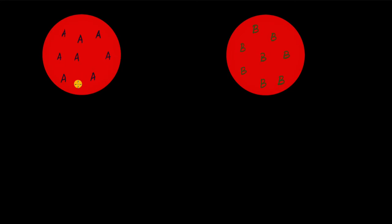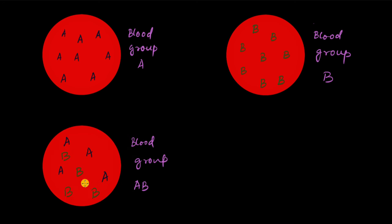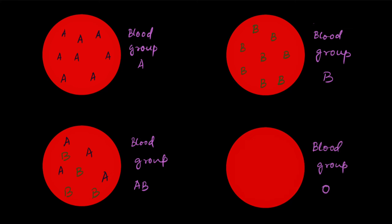In ABO blood grouping, there are two types of antigens on the surface of RBCs: the A antigen and the B antigen. Depending on the presence or absence of these antigens, the blood types A, B, AB, and O are determined. If red blood cells have only the A antigen, the person has blood group A. If only the B antigen, blood group B. If both, AB. If neither, blood group O.